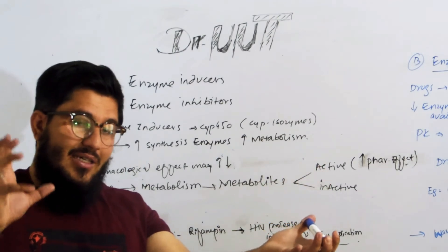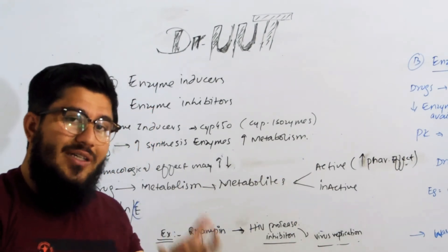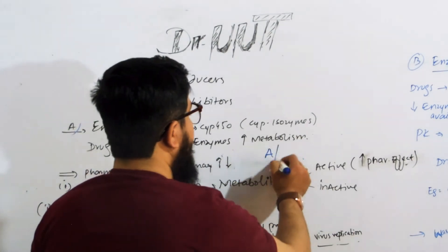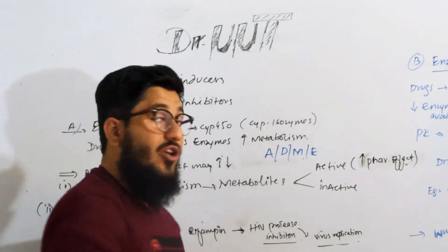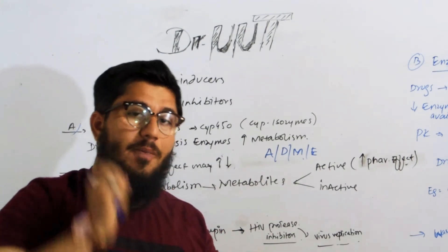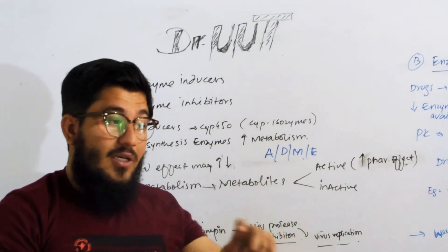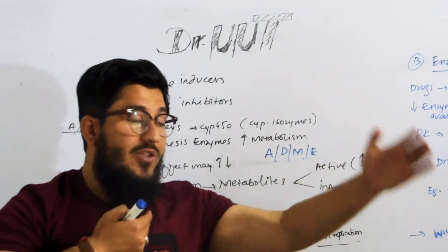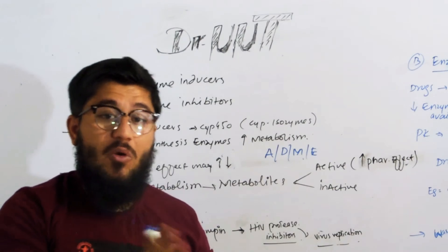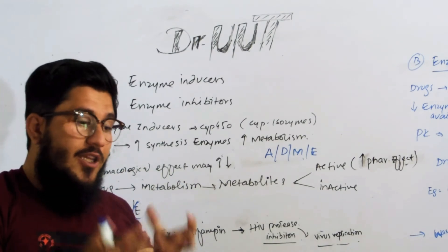What happens when the concentration of enzymes increases? We have pharmacokinetic steps: absorption, distribution, metabolism, and elimination. If the synthesis of enzymes is increased by an enzyme inducer drug, these enzymes are responsible for metabolizing other drugs. After metabolism comes elimination, and if the drug is eliminated, its pharmacological effect is affected.